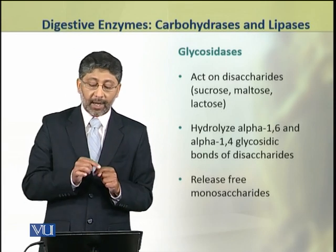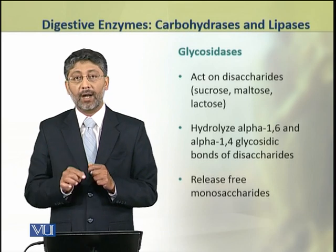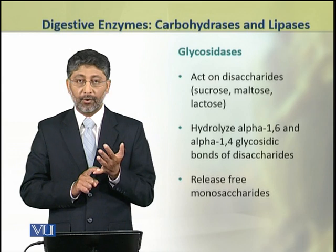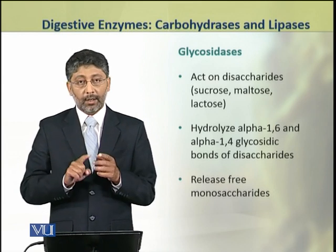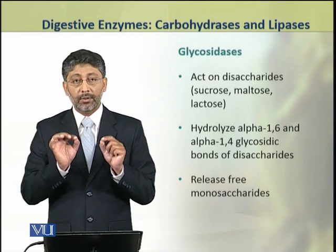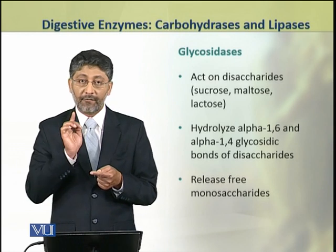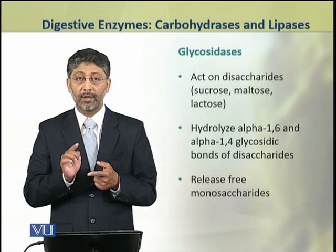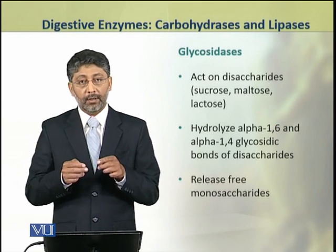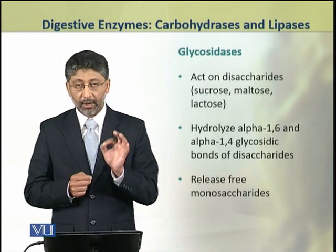After polysaccharidases act, glycosidases then act on disaccharides — for example, sucrose, maltose and lactose. Glycosidases specialize in breaking the alpha-1,6 and alpha-1,4 glycosidic bonds which are found in disaccharides. As a result, they release free monosaccharides.